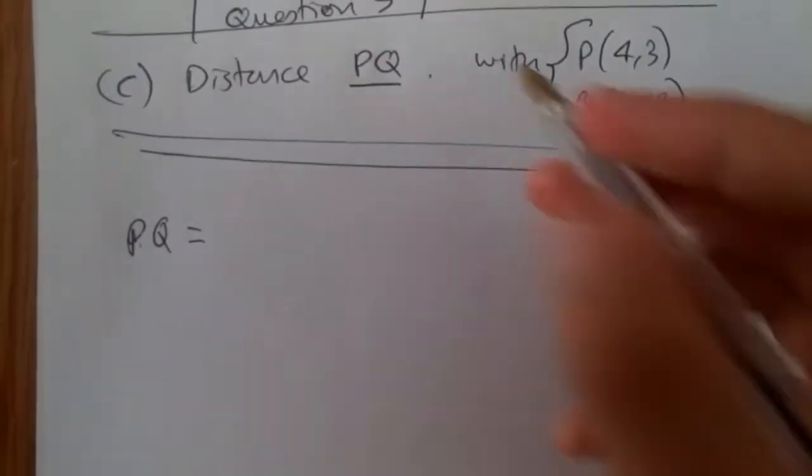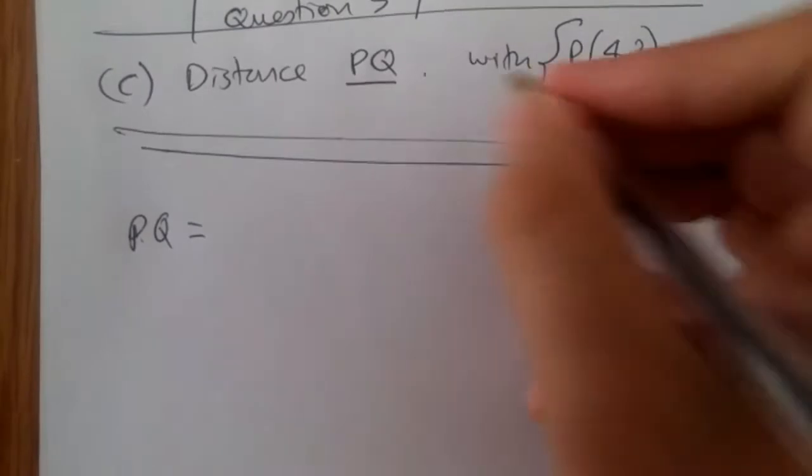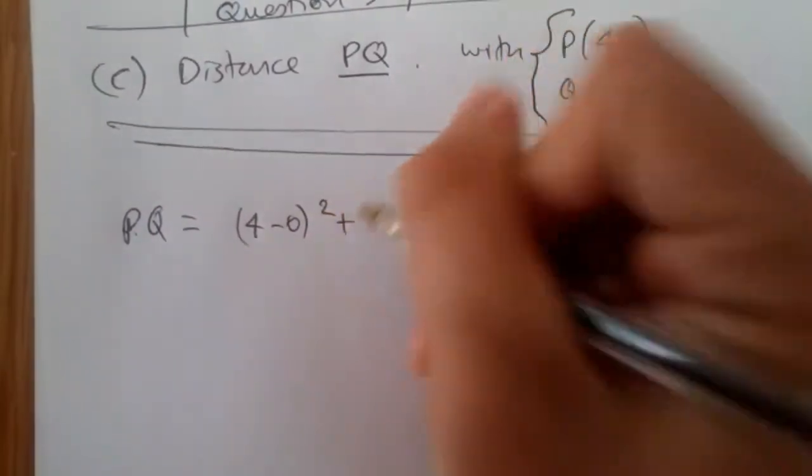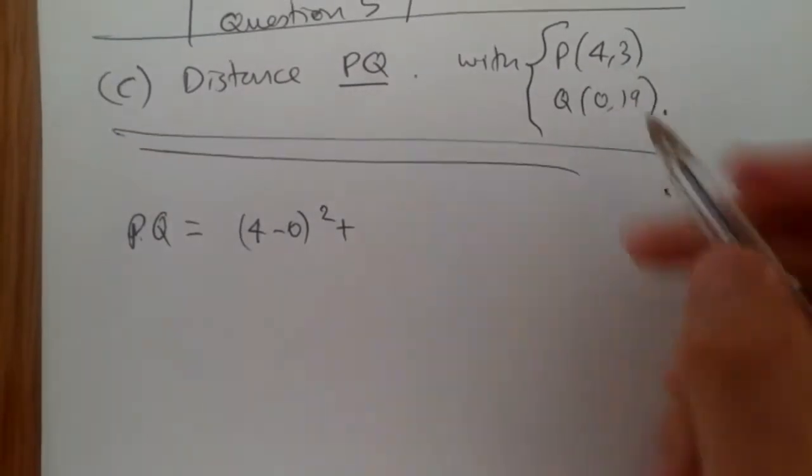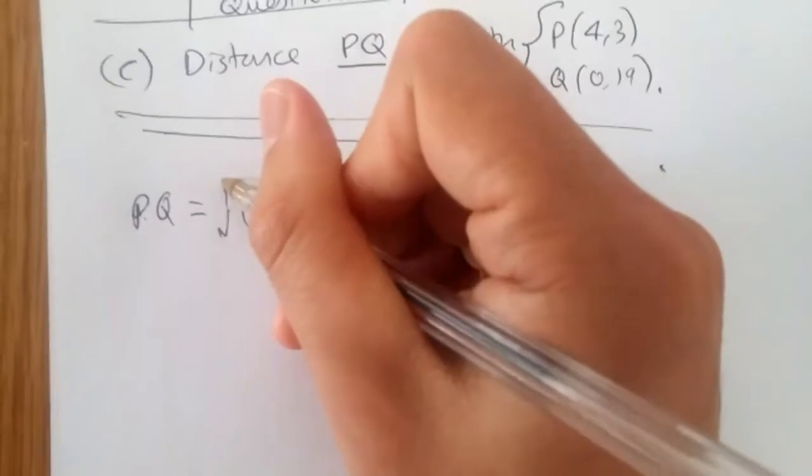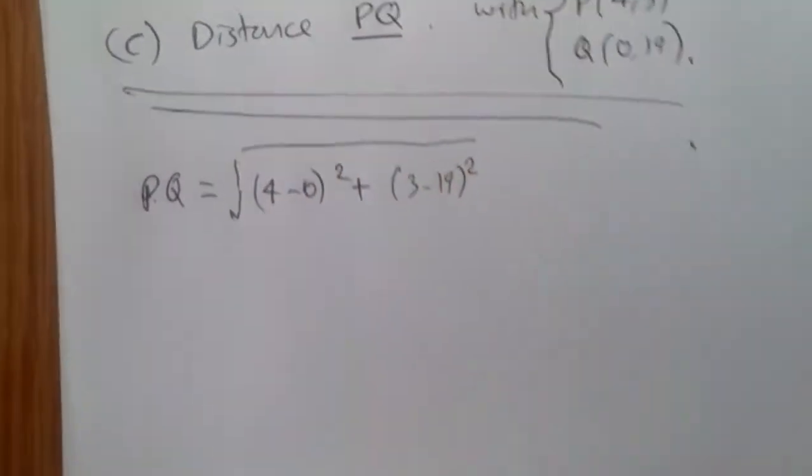take the difference between the two corners. So let's say start X. So it'll be 4 take away 0, all squared, plus 3 take away 19, all squared. And then we have the square root of the whole thing.